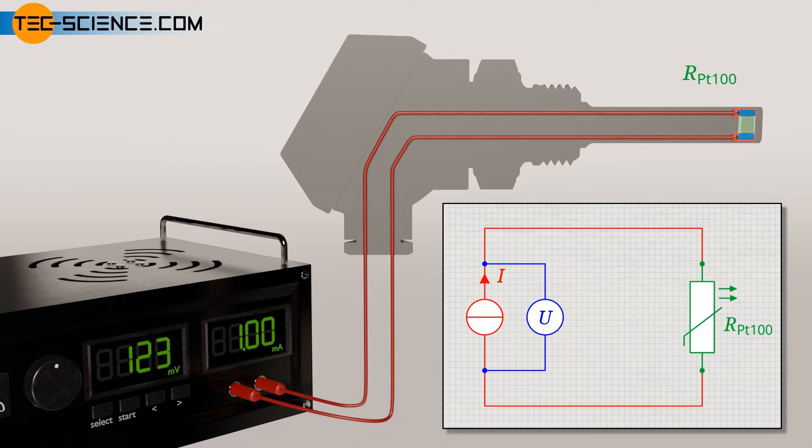This measuring principle is also referred to as two-terminal sensing, since only two measuring leads are sufficient for measurement. In a simplified view, the resistance value of the PT100 can now be calculated from Ohm's law as the quotient of voltage and current.